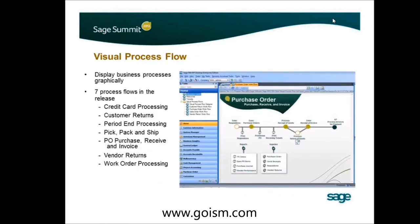One of the last additions to this release is the Visual Process Flow — a universal tool being added across all Sage software. It allows people to visually set up how the process flow needs to occur, and you can customize it for your own office. In purchase order, for example, you can see the flow: enter a requisition, enter purchase orders, and click those buttons to launch screens automatically. Process flows are available for credit card processing, customer returns, period end, shipping, PO receipt and invoicing, returns, and work order processing.